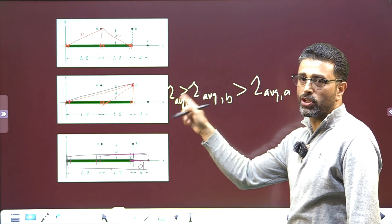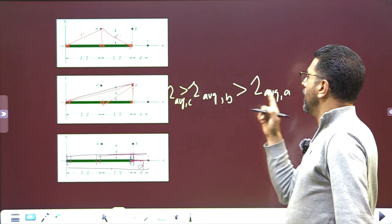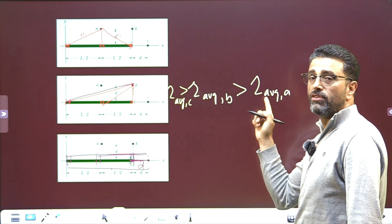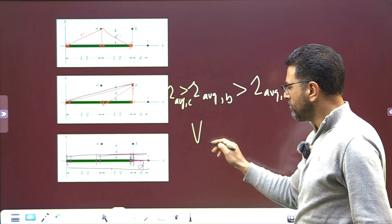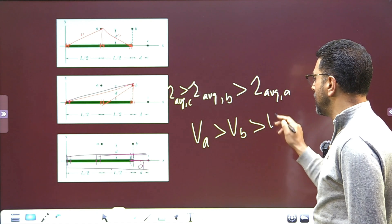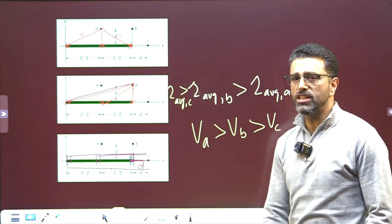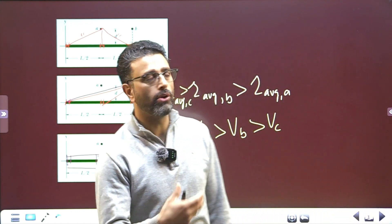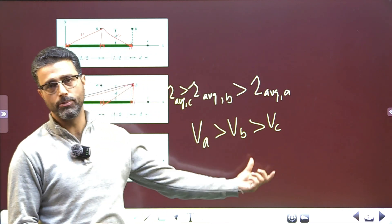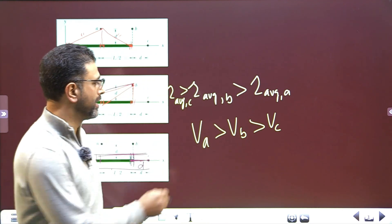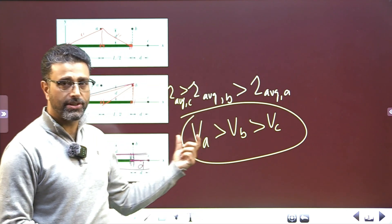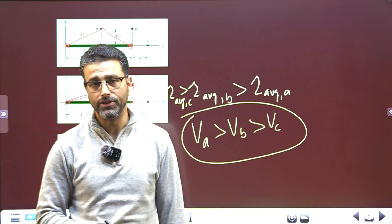Since greater average distance means smaller electric potential, point C has the least potential and point A has the greatest potential. So the ranking is: Va > Vb > Vc. This is purely qualitative analysis — we don't need the exact values of the potential at A, B, or C. Potential at A is greatest and potential at C is least.